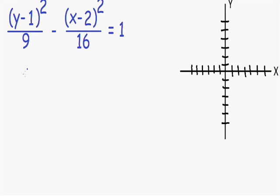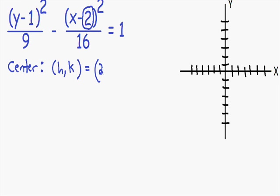The first thing we're going to find is the center. The center is always written in the form (h, k). Your h is always the number next to your x, with the opposite sign. Since the number next to our x is negative 2, our h is positive 2. Our k is the number next to our y term; since it is negative 1, our k is positive 1. So our center is the point (2, 1). We go right 2 units and up 1 unit to plot it.